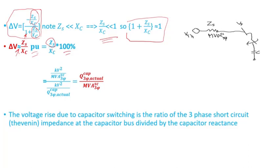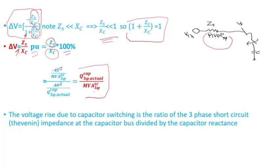ZS, the Thevenin impedance of the system, equals the system voltage squared divided by the available short circuit MVA. XC equals the system voltage squared divided by the actual reactive power rating of the capacitor bank. Since the voltage terms are the same they cancel out, and we end up with the actual rating of the capacitor bank divided by the available short circuit MVA of the system.